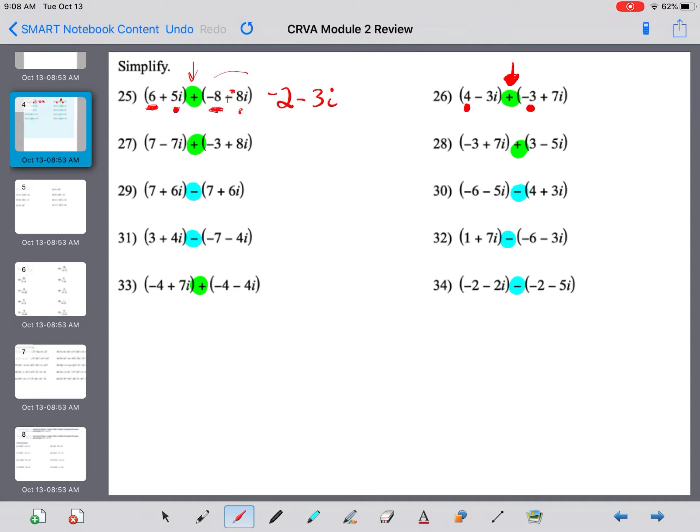So, here, I'm just using a symbol to mark what my like terms are. You can use whatever symbols you want. So, I have a positive 4 and a negative 3. Those are both real numbers. So, that makes a 1. And then, I can combine my negative 3i and my 7i. And that makes positive 4i. That is it. You want to put your real number first. And then, your imaginary number second.